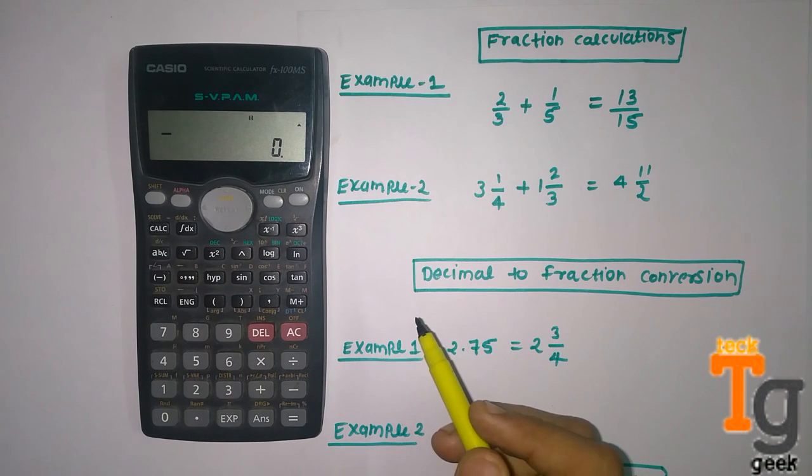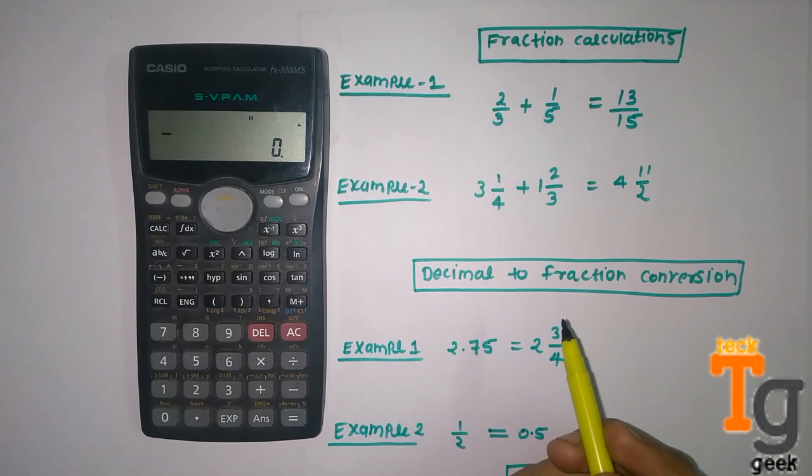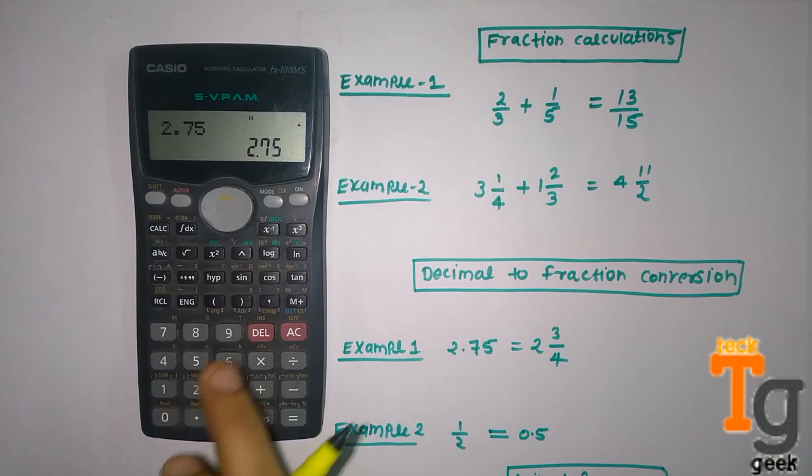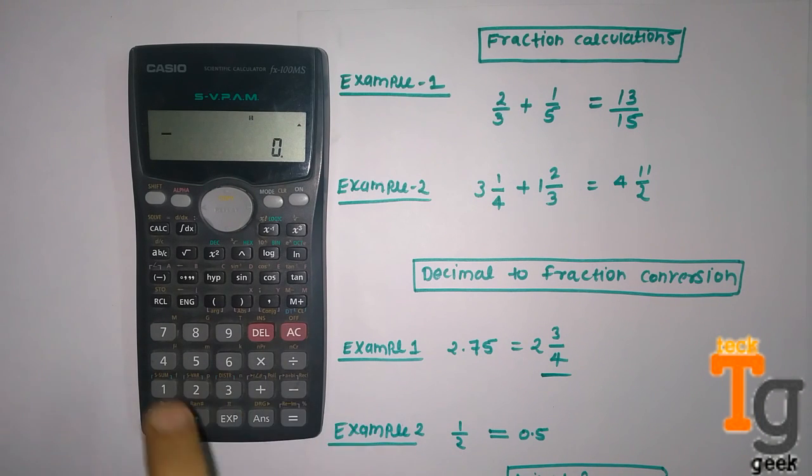Now decimal to fraction conversion. The example is 3.75. So we will enter 3.75 and press equal and it will appear here. And then we will press a b/c, so it will give you this answer.